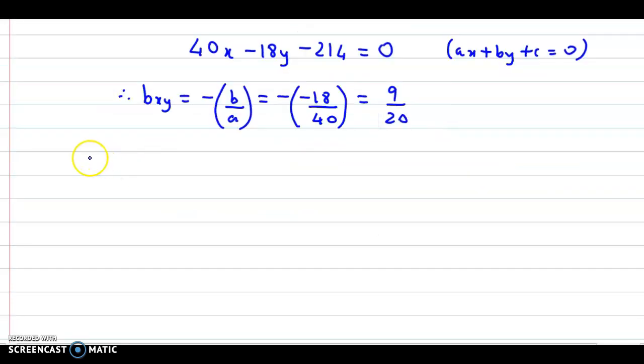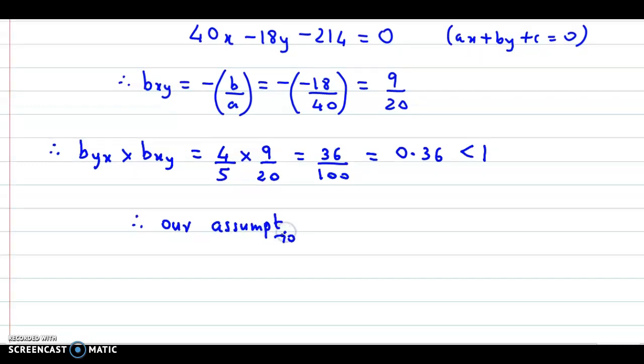Therefore let's check byx into bxy. First value was 4 by 5 and bxy is 9 by 20. That's 36 upon 100, which equals 0.36, which is less than 1. So therefore our assumptions are correct. byx is 4 by 5 and bxy is 9 by 20.